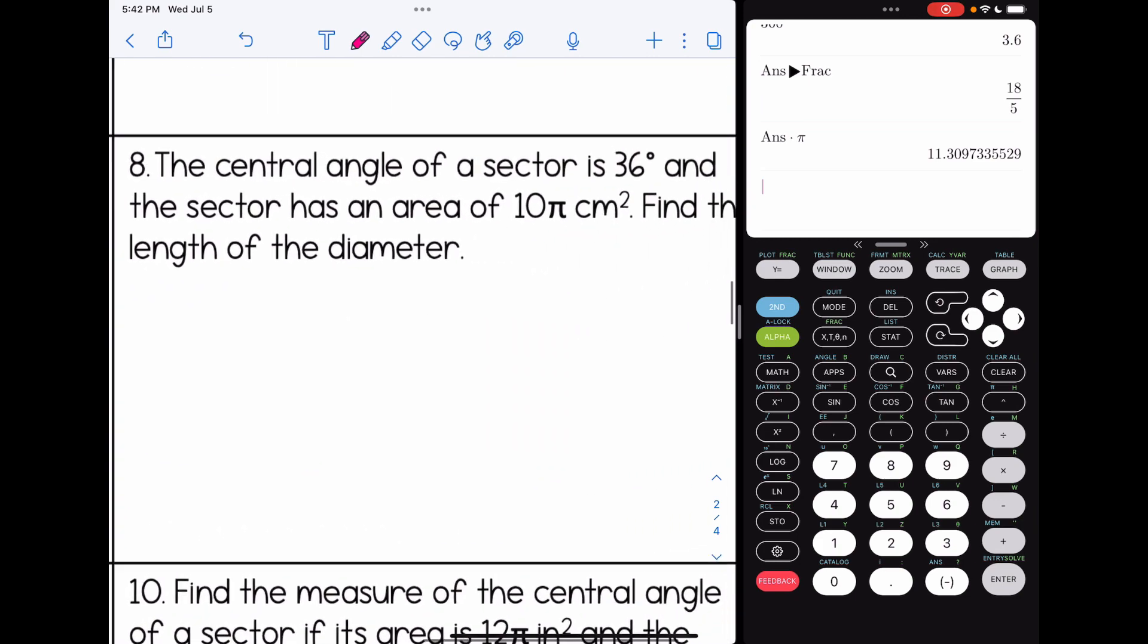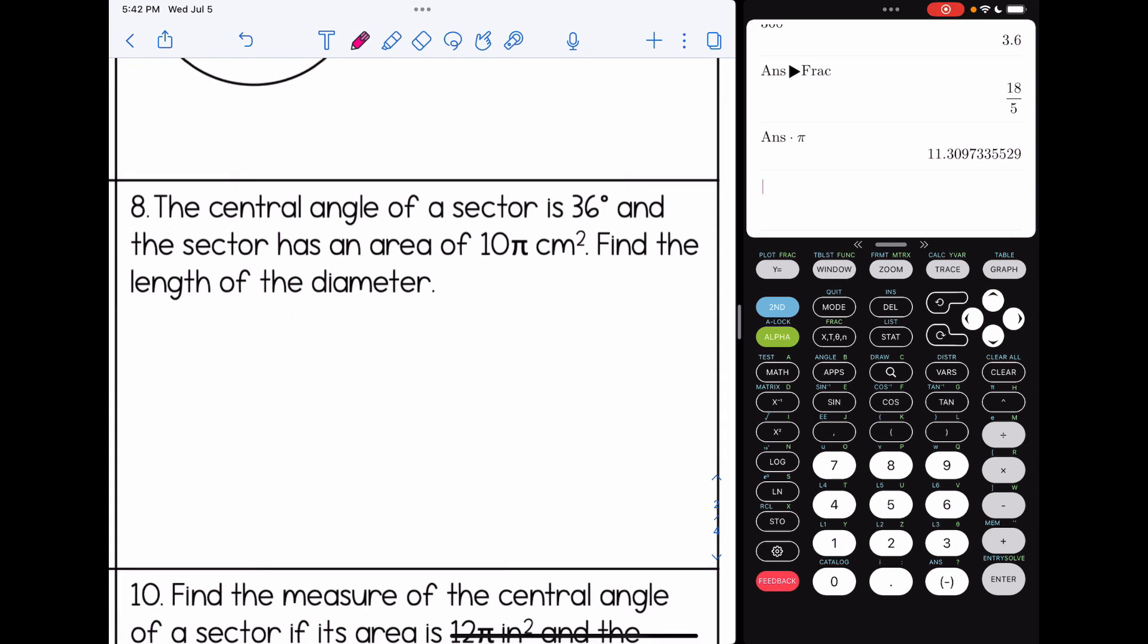All right, number eight. The central angle of a sector is 36, and the sector has an area of 10π centimeters squared. Find the length of the diameter. So we're going to have to do a little algebra here, so I'm going to start by just rewriting the formula. So central angle over 360 pi r squared. Let's plug in everything we know. We know the area of the sector is 10π. We know the central angle is 36, and in order to find the diameter, I'm going to need the radius. So I'm going to write pi r squared there. To simplify this, the first thing I would do is I would get rid of the pi's on both sides. The reason we could do that is think about dividing both sides by pi. You'd get pi over pi on both sides, which is just one.